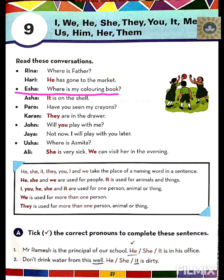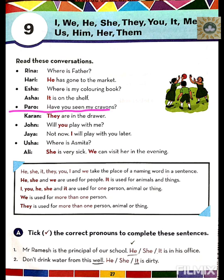Isha: Where is my colouring book? Asha: It is on the shelf. So 'it' is used for 'colouring book.' Paro: Have you seen my crayons? Karan: They are in the drawer. So 'they' has been used for 'crayons.'